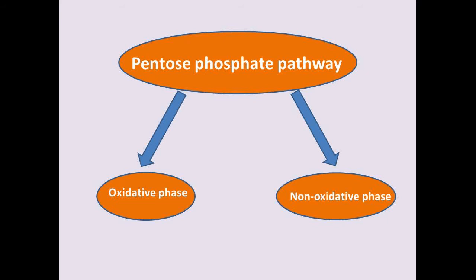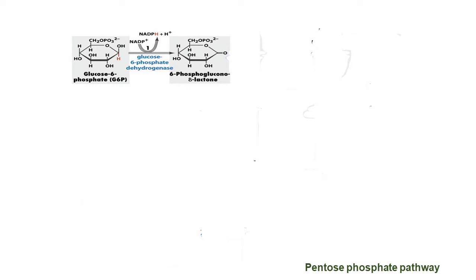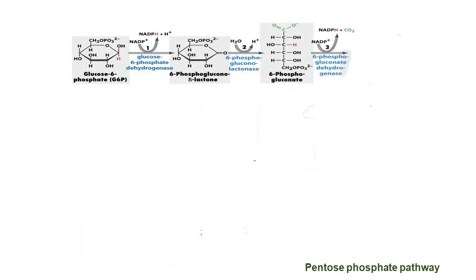The oxidative phase: here the substrate will undergo the process of oxidation. Oxidation is the breakdown of a molecule as it loses at least one of its electrons. This phase is made up of three steps which are irreversible. In the first step, glucose 6-phosphate dehydrogenase enzyme oxidizes glucose 6-phosphate into 6-phosphoglucono-delta-lactone by reducing NADP into NADPH. In the second step, 6-phosphoglucono-lactonase hydrolyzes 6-phosphoglucono-delta-lactone into 6-phosphogluconate. Then, 6-phosphogluconate dehydrogenase converts 6-phosphogluconate into ribulose 5-phosphate by reducing NADP into NADPH.